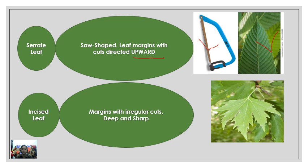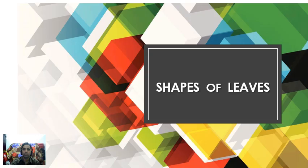Next, incisions are produced in the leaf which may be very deep. Here you can see this is Platanus orientalis. These are deep incisions in the leaf. Such a leaf is called an incised leaf, in which the margins are irregular with cuts that are deep and sharp.